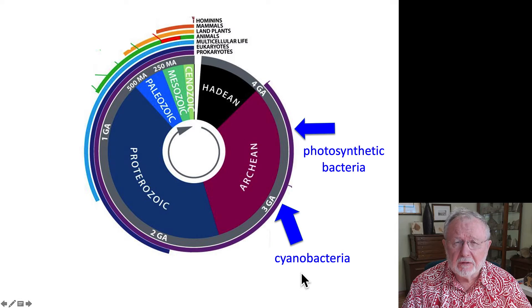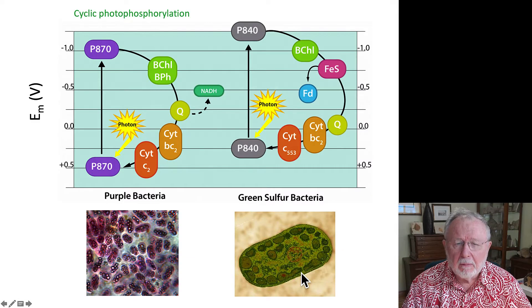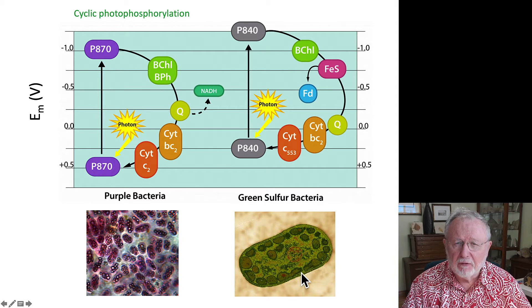This was a single event that changed the world. Purple bacteria and green sulfur bacteria, which had existed at that time, both conducted cyclic photophosphorylation as independent pathways.